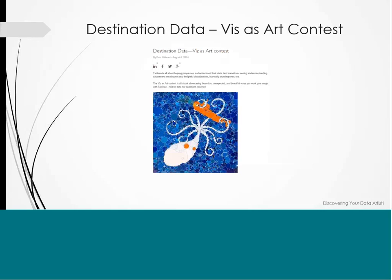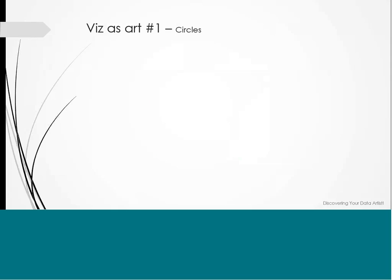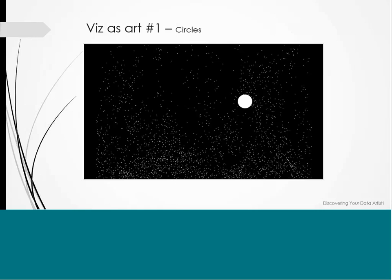A few weeks later, Tableau announced a Destination Data Art contest for the customer conference in Seattle in September. They wanted to showcase something unexpected and fun, so I decided to throw my hat in the ring and play with the 311 data. One constraint was we could only use four colors, since they were printing on t-shirts using a dot matrix printer. I started playing with circles in Tableau and ended up with a piece I called 'Twinkle Twinkle' — a larger circle made with calculated fields among scattered smaller ones.